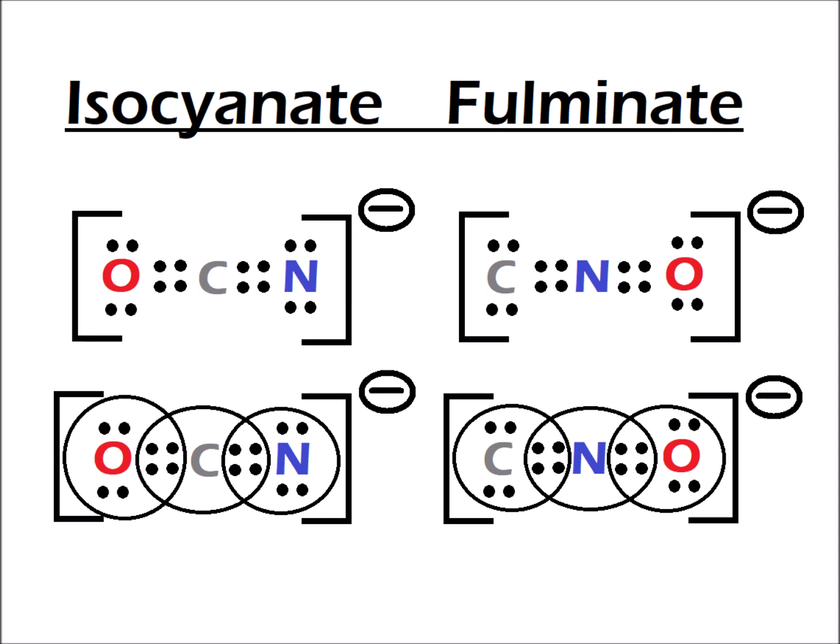Notice that in each case we can draw a valid Lewis dot structure. In the second line, we see a Venn diagram style showing that each atom actually does satisfy the octet rule for each of these ions.